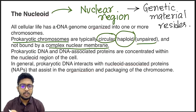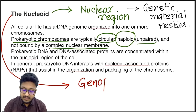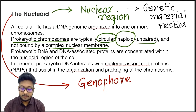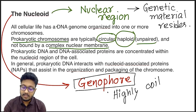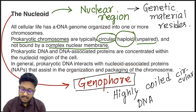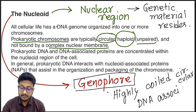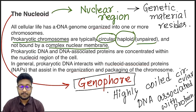The nucleoid is also called a genophore, which refers to a supercoiled or highly coiled circular DNA associated with proteins. This highly coiled circular DNA associated with proteins is called the genophore — another name for the nucleoid, which represents the prokaryotic chromosome.